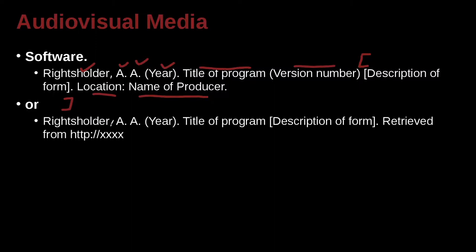Another way you could do this is to have the name of the maker, the producer, or someone related to the owner, the year, the title of the program, the description of the program — what is it — and then where you got it online, for example, because it could be a web program, something used online, or downloaded from online.